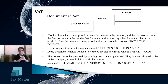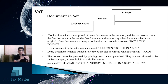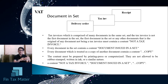Sometimes in business, the tax invoice is prepared together with another commercial document as one set. For example, a set of documents may include a delivery order, tax invoice, and receipt together. This set is given to the customer and used as supporting documents for the accounting records of the VAT registrant.